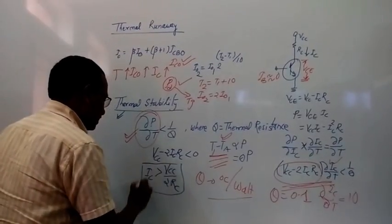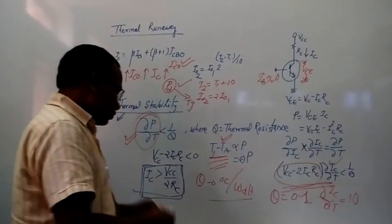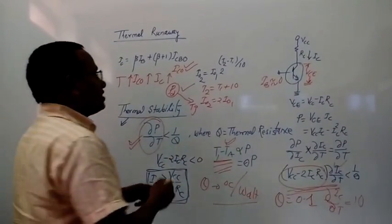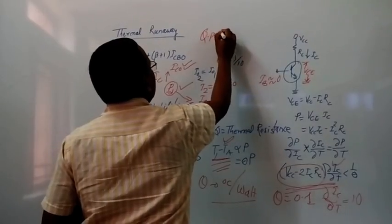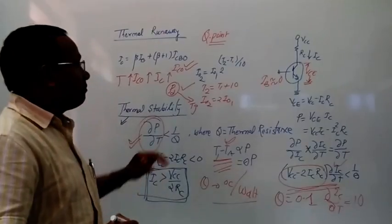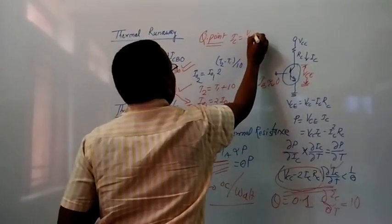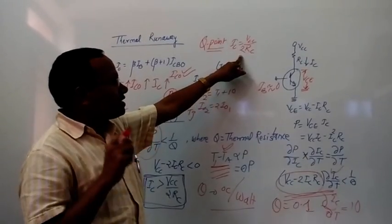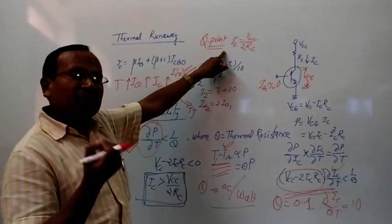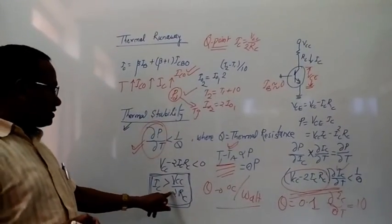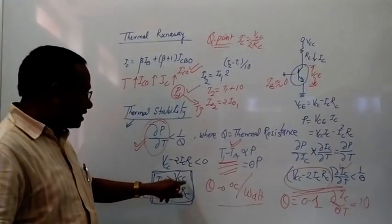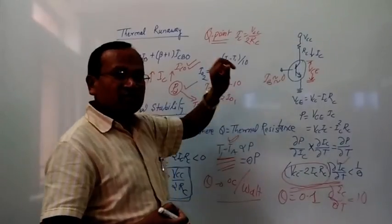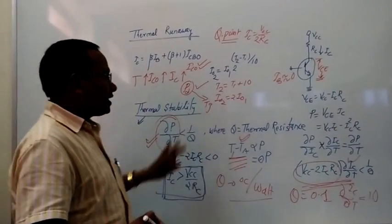This is a most important finding. We have studied in the load line concept of the transistor that the Q-point is normally expected to lie at the middle of the load line, where IC = VCC/(2·RC). However, the thermal stability condition requires IC > VCC/(2·RC). Both conditions are correct in their own context.